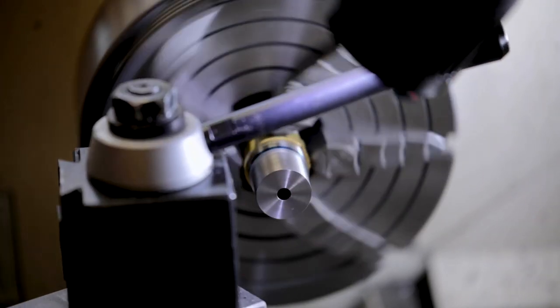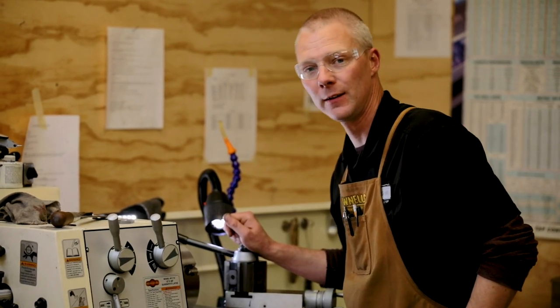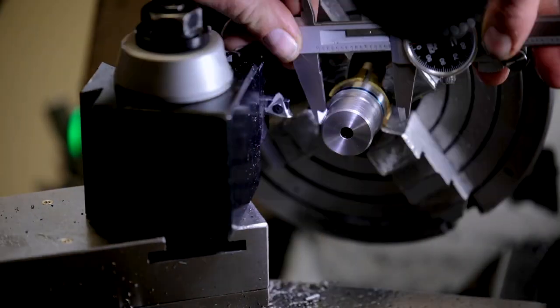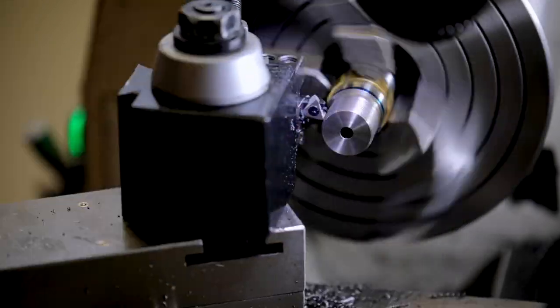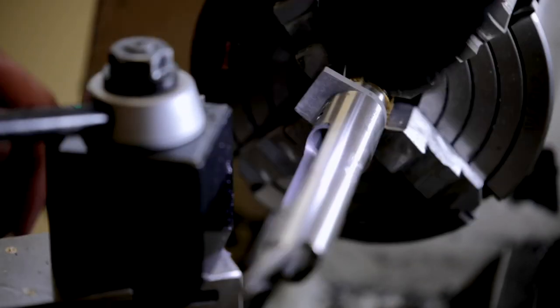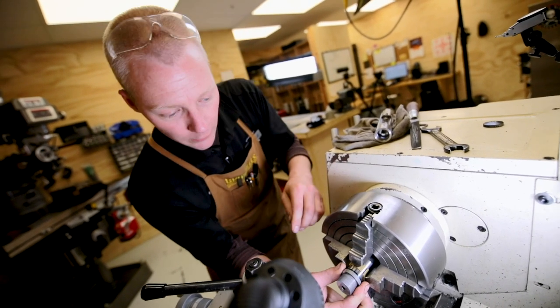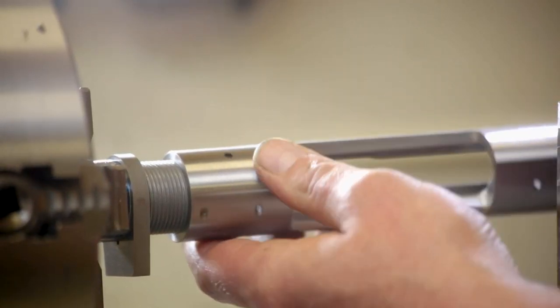All right, now that I've got my length and diameter established, we're going to go in and thread for the receiver now. Okay, now our threads are cut. Let's go ahead and do a final test fit, make sure everything's good. Recoil lug on. Receiver.